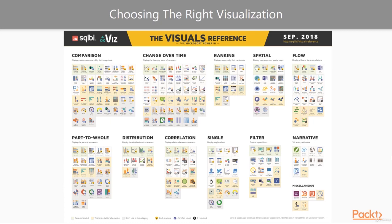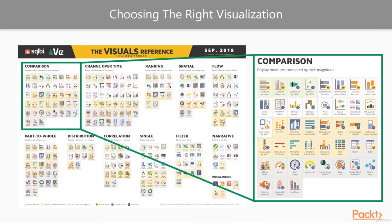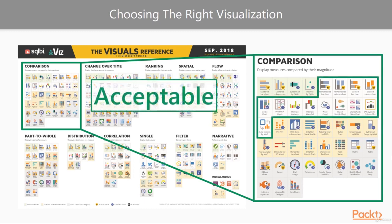There are more categories and visualizations that I want to cover, but let me briefly walk you through how to use this visuals chooser before wrapping up. Let's take the comparison category as our example. The first section at the top will be the list of top pick visuals for this category, meaning these will best represent your data and also typically offer the most features for customizing your visualization. The second option is a list of preferred visuals — they might not be as high quality or represent your data as accurately, but they still work well in many situations, though it is better to use the top pick ones when you can.